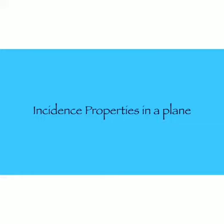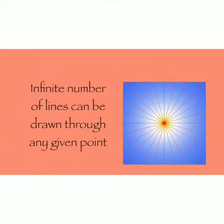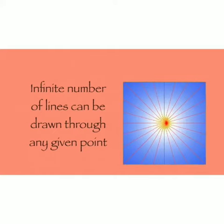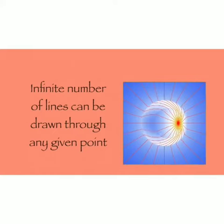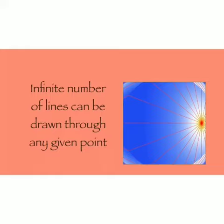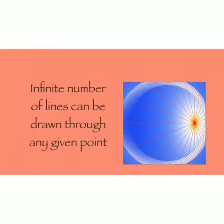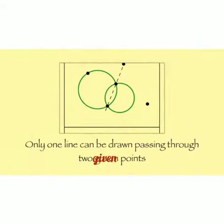An infinite number of lines can be drawn through any given point. The second property: if we have been given two points A and B, how many lines can be drawn which pass through both the points? Only one line can be drawn through two given points.